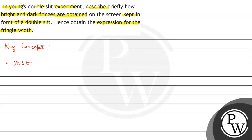We have two slits and a screen placed in front of them. When we observe the screen, there is a central white spot, and white spots at certain equal intervals on both sides of the central white spot, also known as bright fringes.